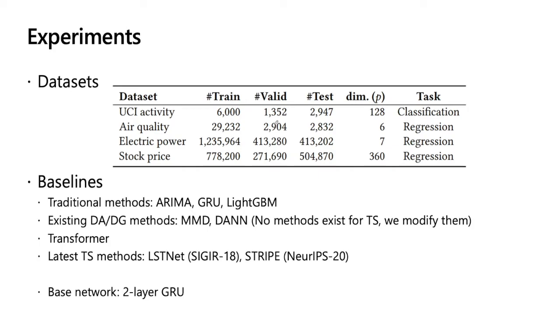Now, we are coming to experiments. We adopted four experiment datasets. Among them, one is for classification tasks, and three are for regression tasks. And here are their statistical information of these datasets. We use some baselines. We use four kinds of baselines. The first baseline is some traditional methods like ARIMA, GRU, and LightGBM, which are all popular methods for time series modeling. Second, it's existing DA or DG methods like MMD or DAN. Note that no method exists for time series transfer learning, so we simply modify their loss. And the third type is transformer, which is a strong baseline. And the last one is the latest time series methods like FSTNet from SIGIR'18 and Stripe from NeurIPS'20.